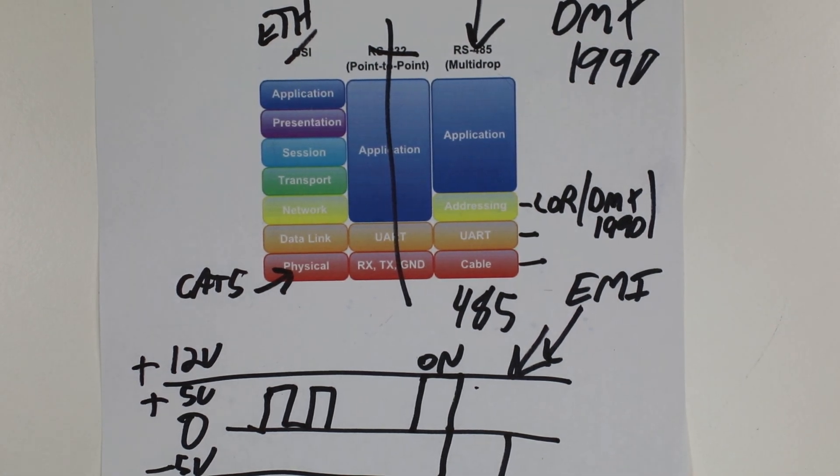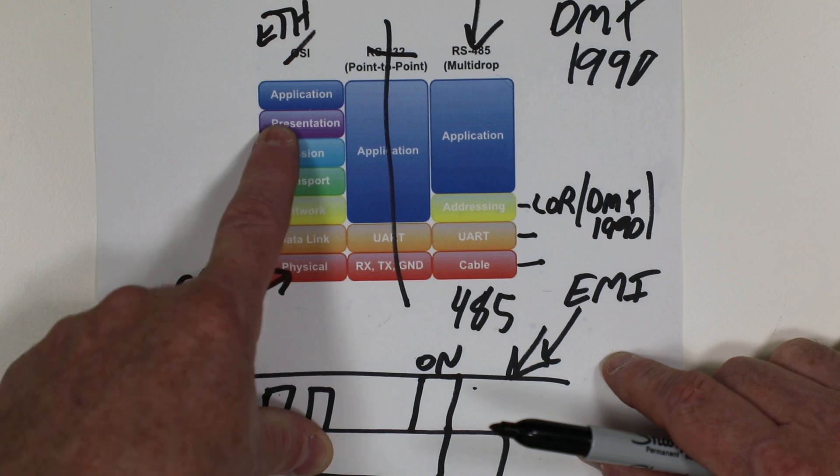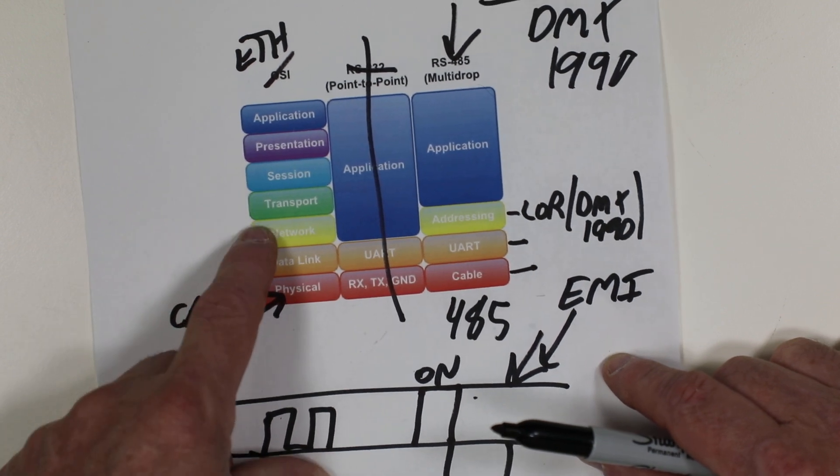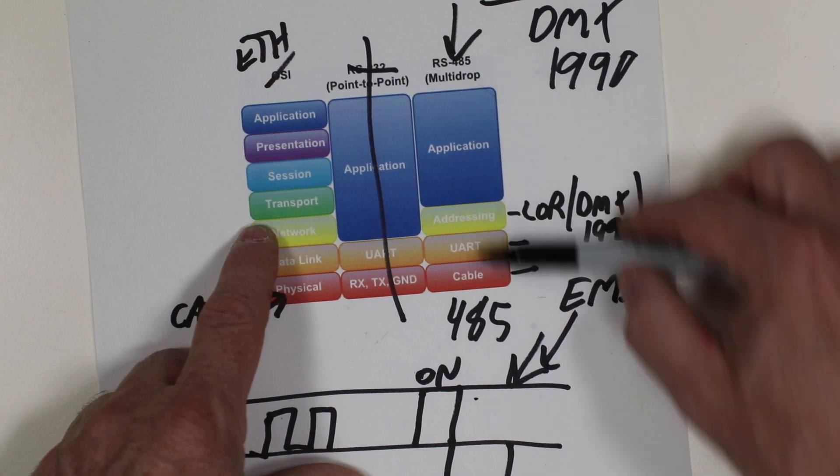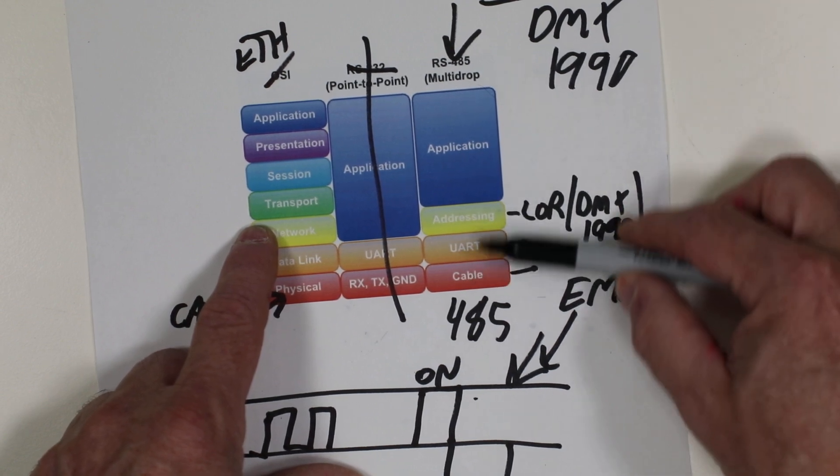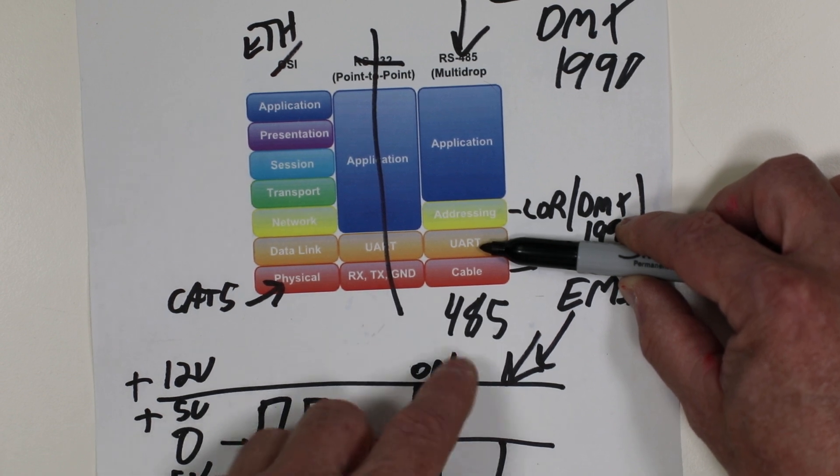Now, let's compare that over to modern controllers. So now, we have a much more sophisticated stack here, what's called the OSI model, on Ethernet. Because compared to RS-485, it's pretty simple. You've got a cable, you've got a method of sending some, turning some bits on and off on the wire electrically.